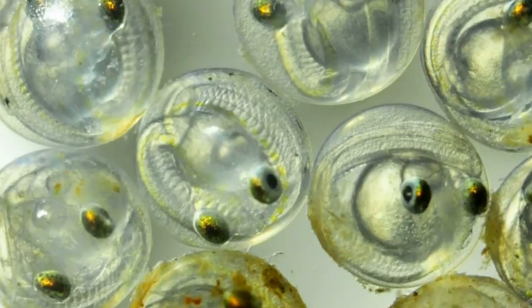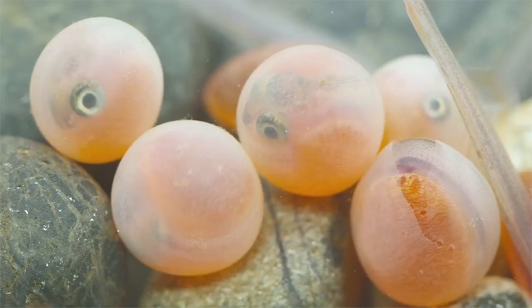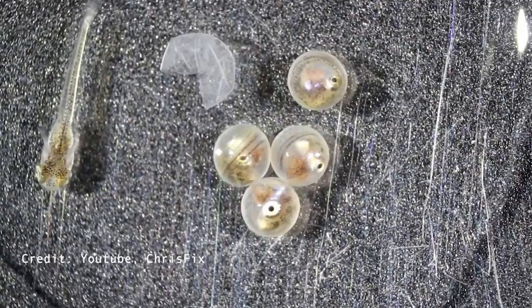Temperature plays an important role in determining the egg hatching time. The embryo refers to the stage where the fish is still unable to feed itself. Food for the embryo comes from the mother, either directly through the egg yolk or indirectly through the blood. The embryonic stage could be divided into two: inside and outside of the egg.